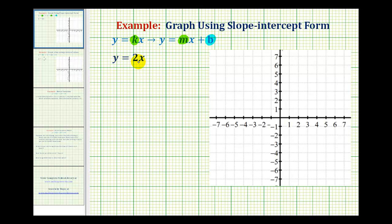So if we want to graph y equals 2x, we can think of this as y equals 2x plus zero. So if b equals zero, that means the y intercept is the point zero, zero, or the origin, which is always true for a direct variation.